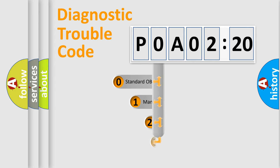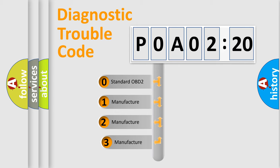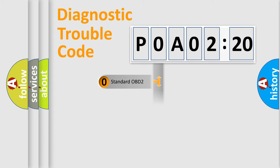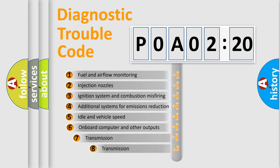This distribution is defined in the first character code. If the second character is expressed as zero, it is a standardized error. In the case of numbers 1, 2, or 3, it is a manufacturer-specific error expression.